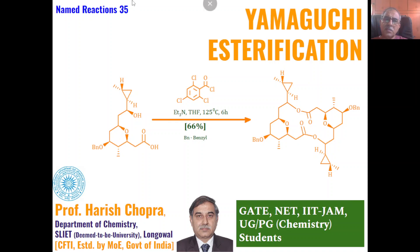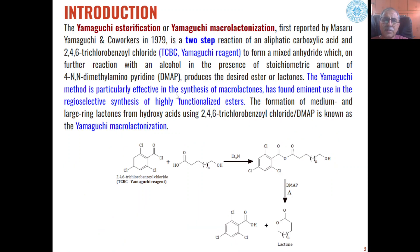Dear students, this is our 35th lecture on named reactions and today we will be discussing about details of Yamaguchi esterification. Yamaguchi esterification, named after its discoverer Yamaguchi and co-workers, is also known as Yamaguchi macrolactonization. This is basically a two-step process where aliphatic carboxylic acids are reacted in presence of Yamaguchi reagent, that is 2,4,6-trichlorobenzoyl chloride, in presence of a base.